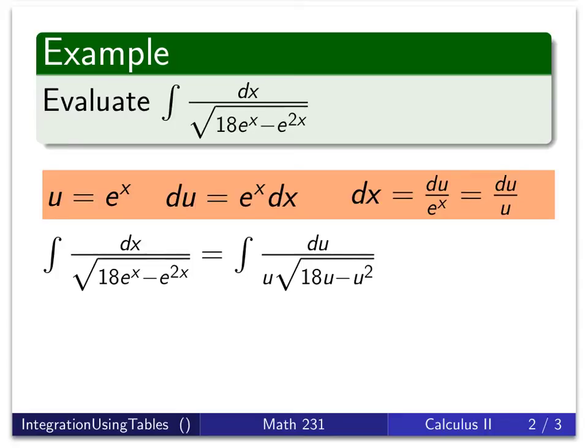Again, I look to see what's available in my table of integrals. I've got a radical. Outside the radical we have just a single power of u. And then inside the radical, I've got a quadratic in u and the coefficient of u squared is negative. So I'll look for something that fits that form.